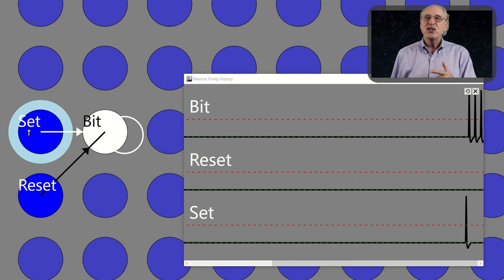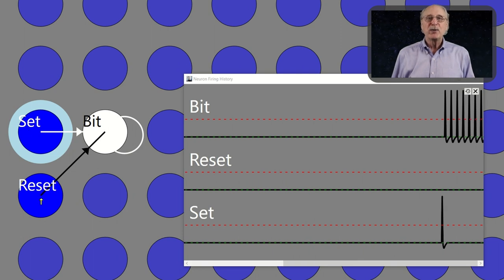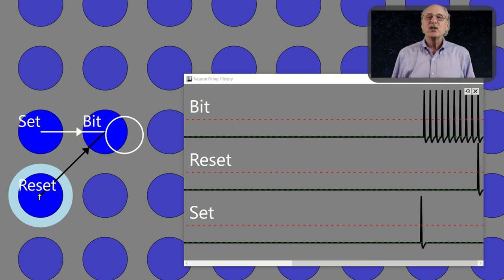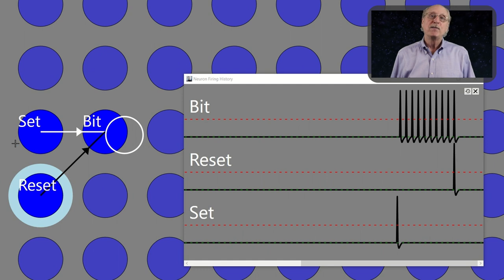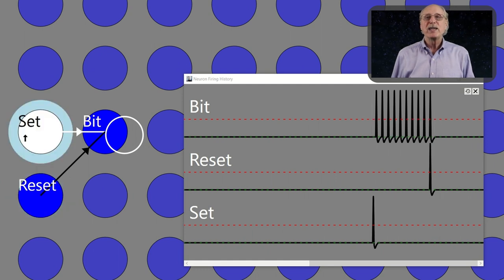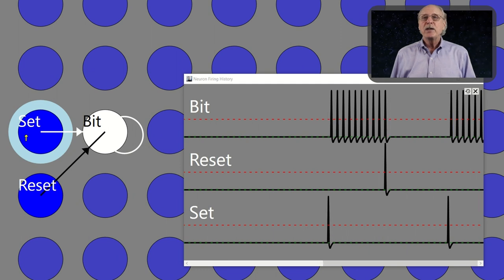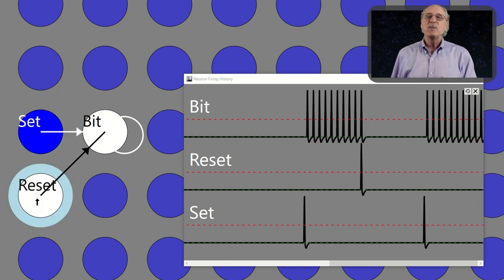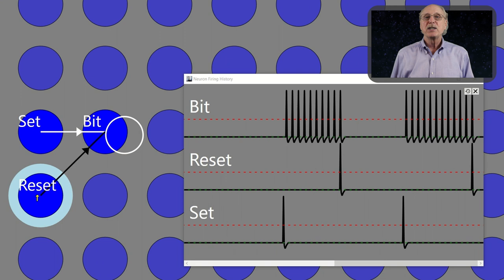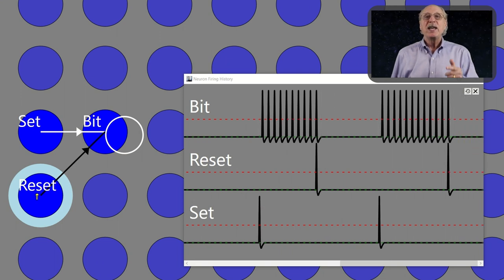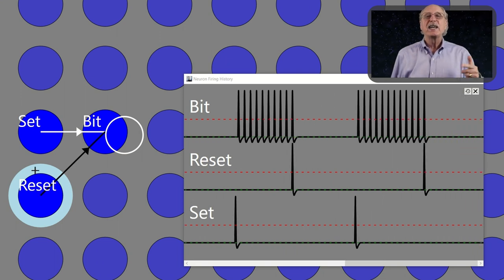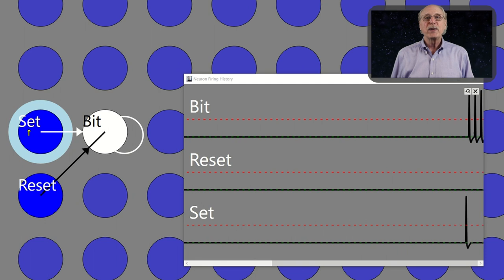A neuron can act as a single bit of short-term memory. In a simple model, consider a neuron connected to itself. If it starts spiking, it will spike indefinitely until some suppressive signal causes it to stop. If the neuron is spiking, this represents a 1, if not a 0. This way, a single neuron can act as a single bit of short-term memory.